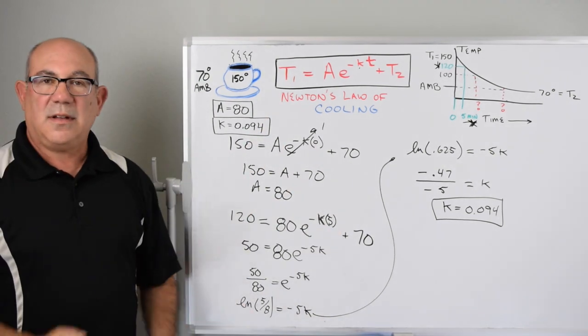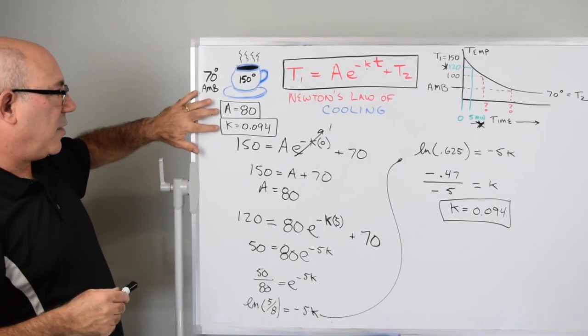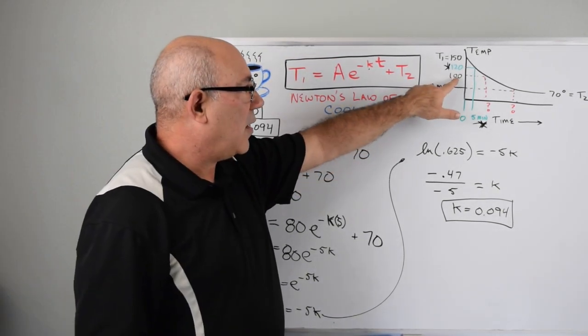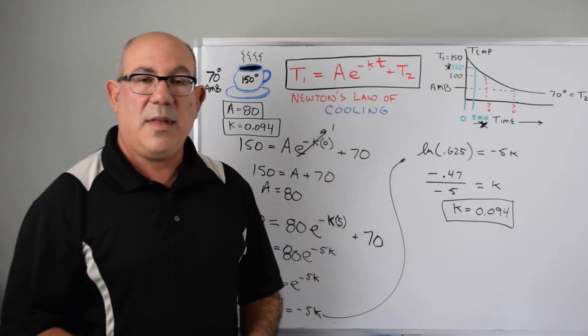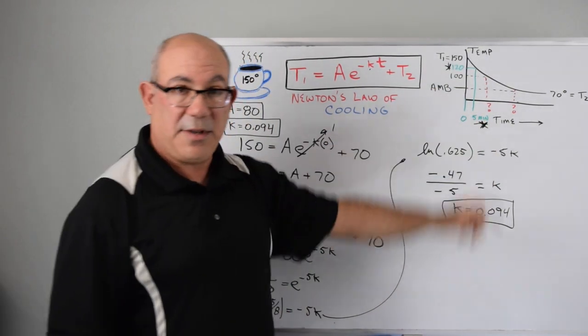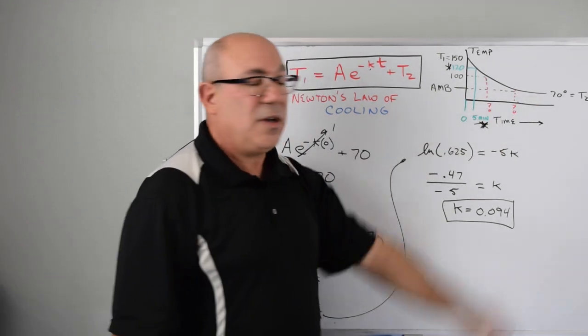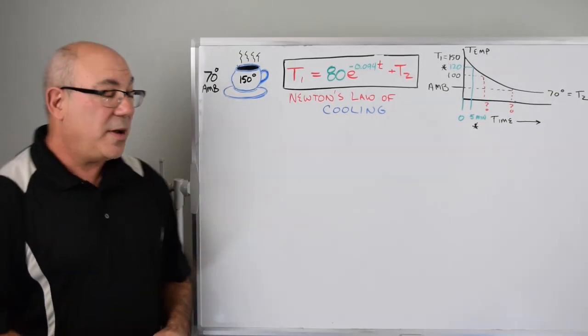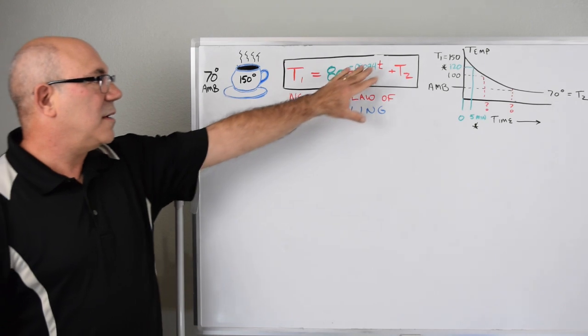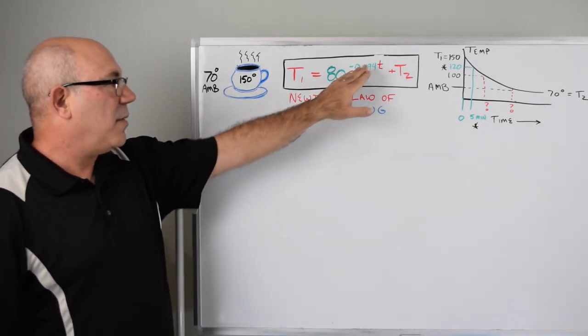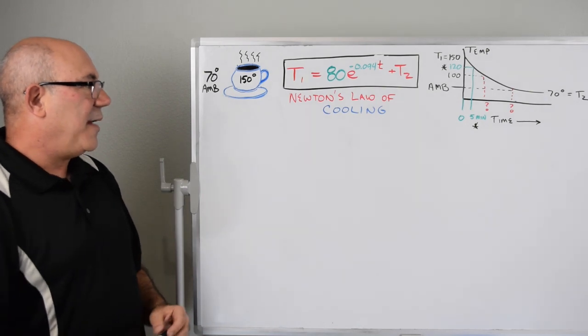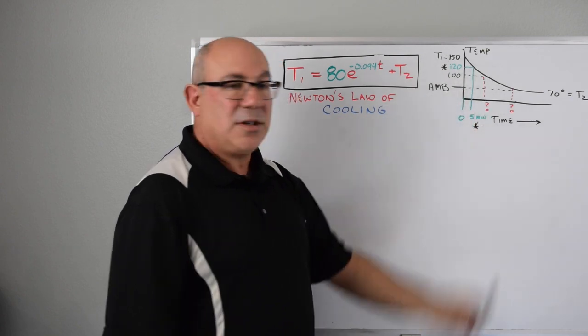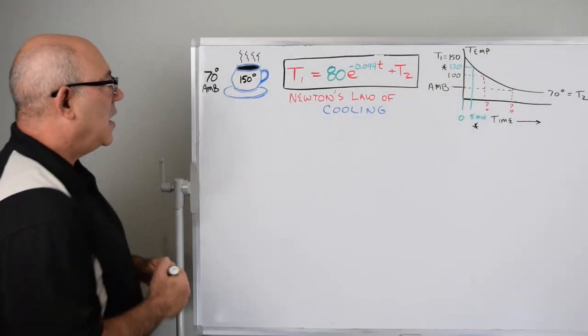We've got both of our variables, so we have the equation fully defined now. We can go in and figure out when that temperature will be 100 degrees and how long it will take to get to 70 degrees. Welcome back. We've got our constants into the equation - I moved them up into the equation here so you can see them. Now we're going to get to business and figure out when the coffee will reach 100 degree Fahrenheit.